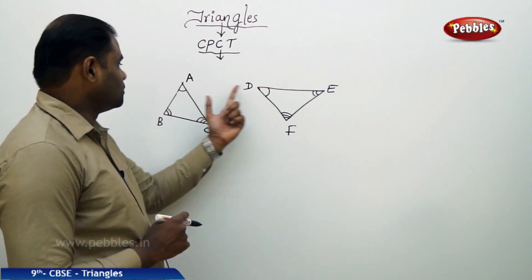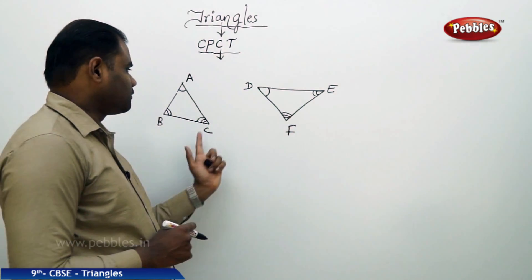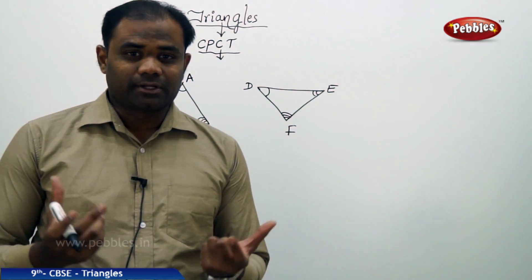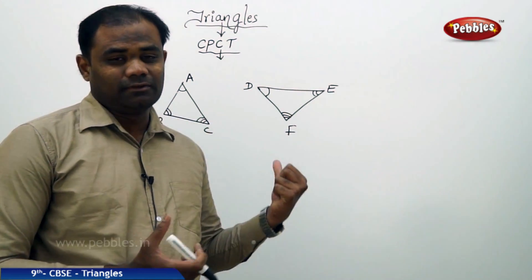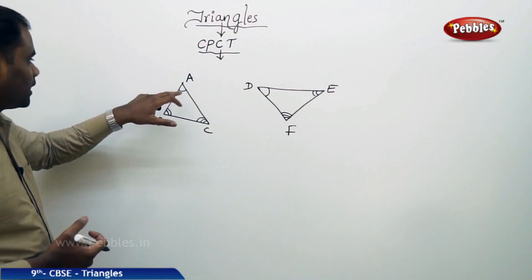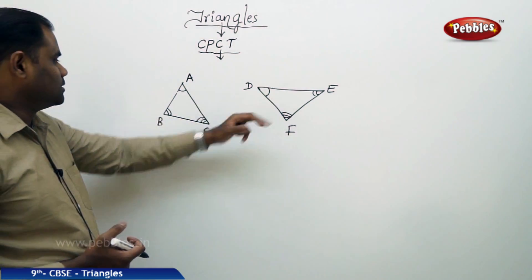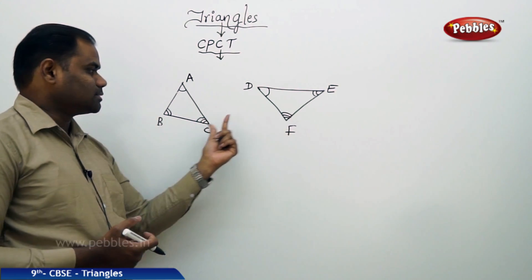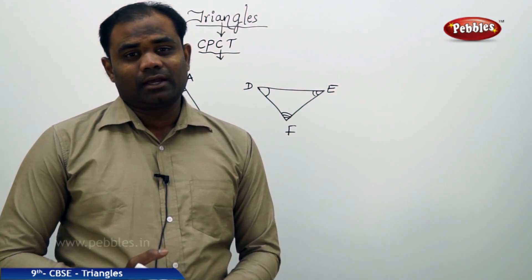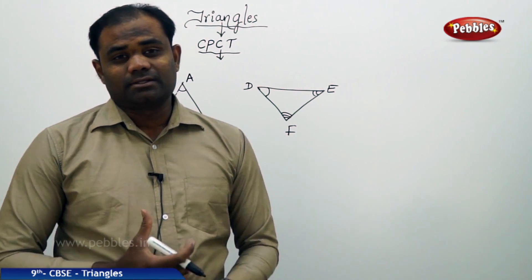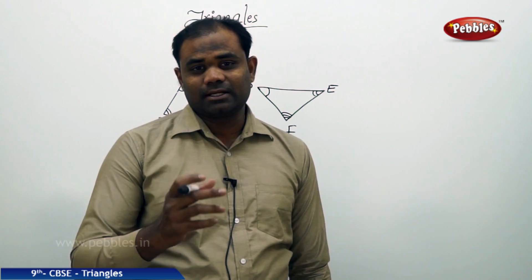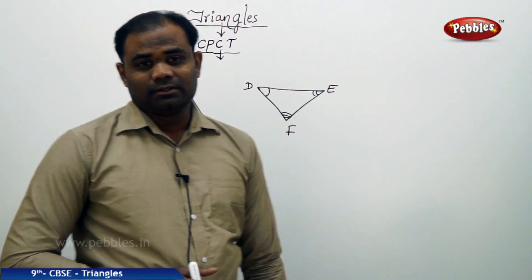I do not say A equals D, B equals F, and C equals E in a random manner. There is a fixed correspondence between the angles of the first triangle and the angles of the second triangle. Angle A equals angle D, angle B equals angle E, and angle C equals angle F are said to be correspondingly related angles. Now let's see how the corresponding sides are connected with the two triangles ABC and DEF.